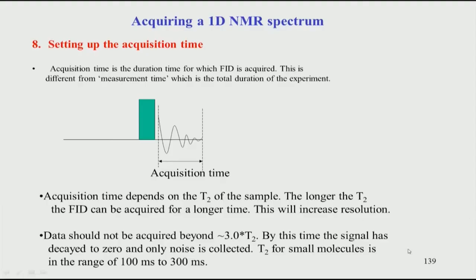This is shown here — this is the 90-degree pulse shown as a typical pulse program. We saw what all we have to do up to this point. After the pulse is applied, you have the signal which is called the FID — the induction current or EMF induced in the coil, detected as an FID. This depends on T2: if T2 is short the signal goes down very fast; if T2 is long the signal will stay longer. The oscillation is reduced in amplitude because of T2 relaxation, and at some point it goes to zero.